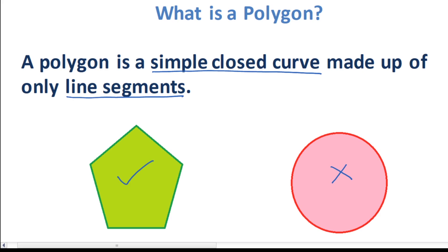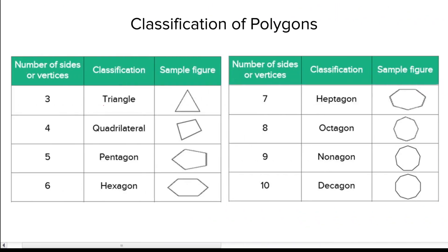Based on the number of sides or vertices, polygons are classified as triangle, quadrilateral, pentagon, hexagon, heptagon, octagon, nonagon, and decagon.